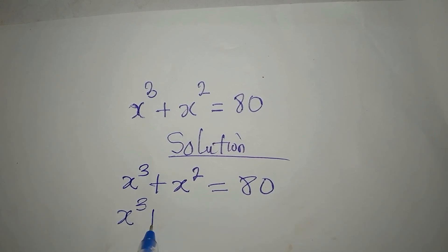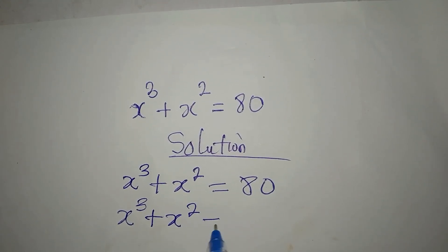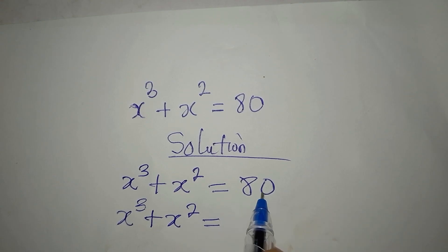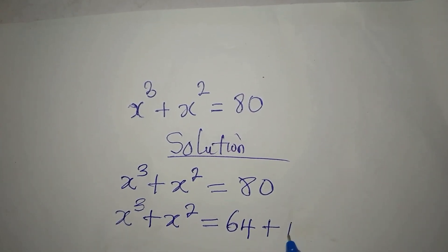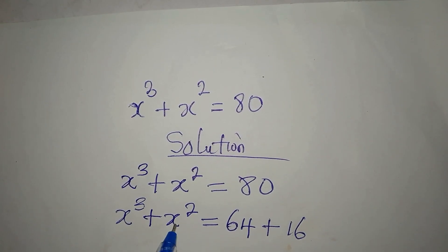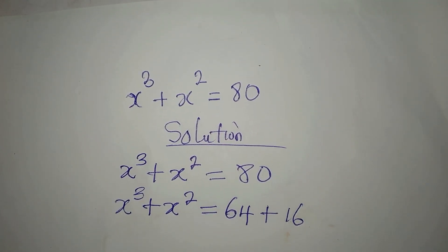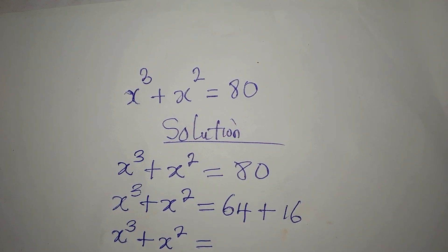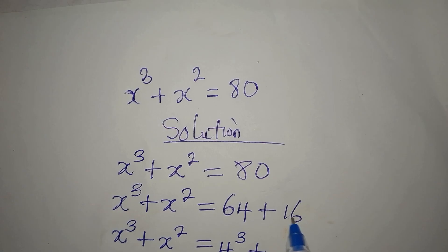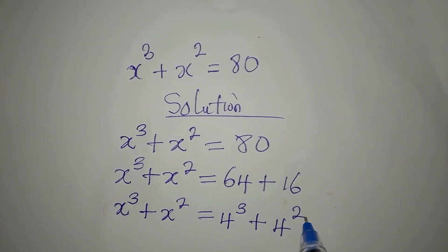So this is x to the power of 3 plus x to the power of 2 equals 80. I can get 64 from 80 — 64 can be expressed in cube form — then plus 16 for the remainder. 16 can also be expressed in square form. So x³ + x² equals 4 to the power of 3 plus 4 to the power of 2.